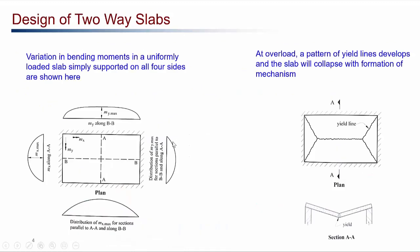For the two-way slab, we have bending moment in both x and y directions. The maximum bending moment is at the mid-span. At section AA, the maximum bending moment MX is maximum at the center span, and the distribution of this maximum bending moment along BB is as shown. Again, the maximum bending moment MX is at the mid-span. Similarly, in the y direction, MY is maximum at the mid-span, and the distribution of this maximum bending moment along AA is also shown.